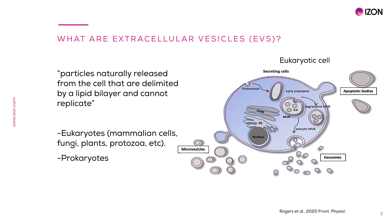As seen here, each eukaryotic cell releases a heterogeneous population of EVs, with three broad categories depending on their biogenesis mechanism, historically named exosomes, microvesicles and apoptotic bodies.